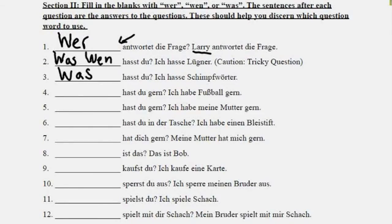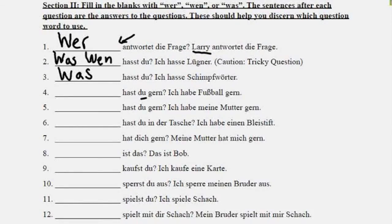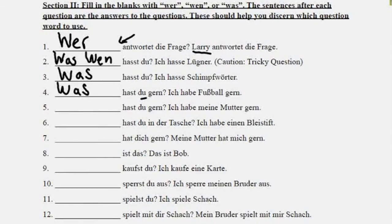Number four: blank hast du gern? Du is always the subject, so the question word is accusative. The answer is Ich habe Fußball gern — I like soccer. Soccer is not a person, so we say was. Number five has the same structure, but the answer is Ich habe meine Mutter gern — I like my mother. My mother is obviously a person most of the time, so we say wen — whom do you like?